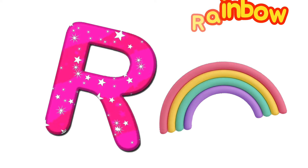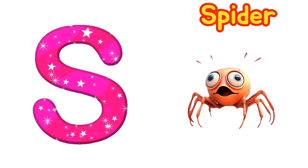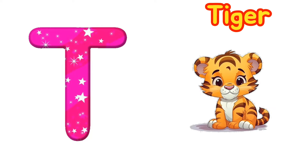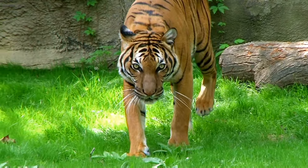R is for Rainbow. R-R-Rainbow. S is for Spider. S-Spider. T is for Tiger. T-T-Tiger. T-Tiger.